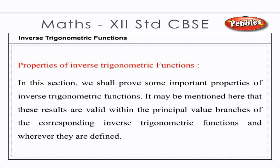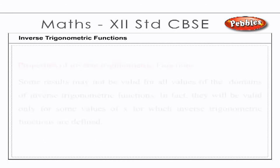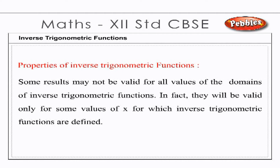Properties of inverse trigonometric functions. In this section, we shall prove some important properties of inverse trigonometric functions. It may be mentioned that these results are valid within the principal value branches of the corresponding inverse trigonometric functions and wherever they are defined. Some results may not be valid for all values of the domains of inverse trigonometric functions; they will be valid only for some values of x for which inverse trigonometric functions are defined.